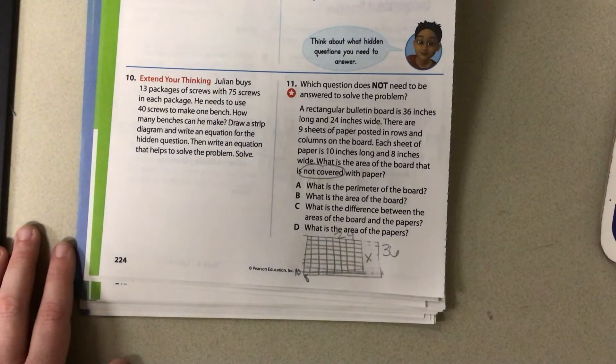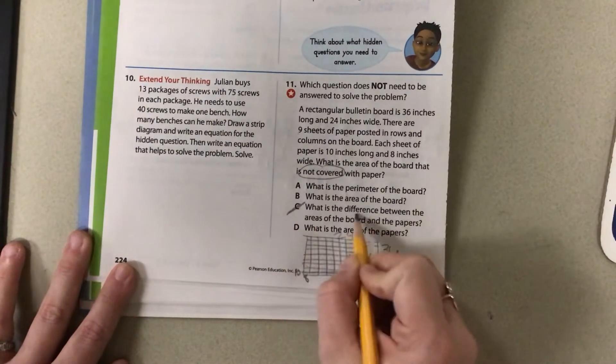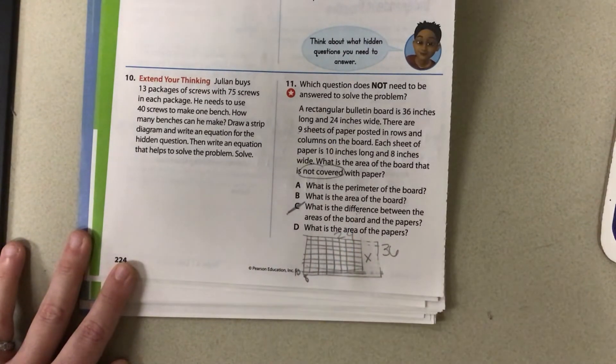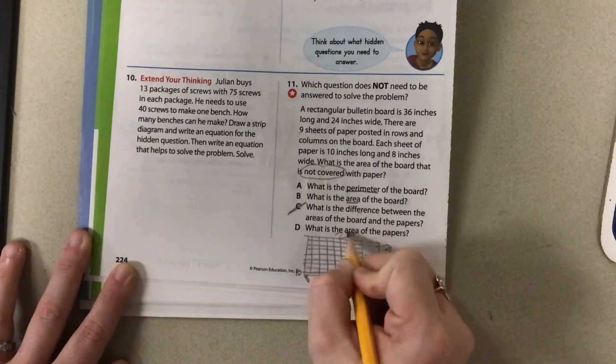What is the difference between the areas of the boards and paper? Okay, for sure we need that one because that is talking about subtracting the big area from the little area. And what is the area of the paper? Okay, well, let's look at this. Perimeter, area, area.